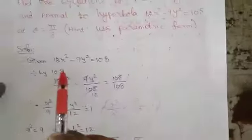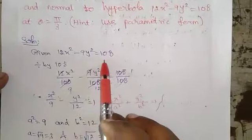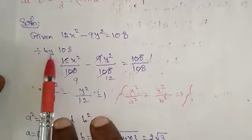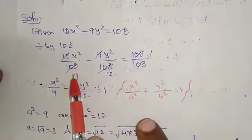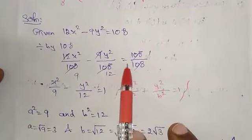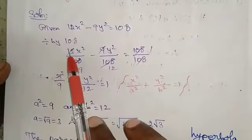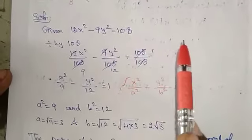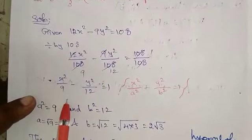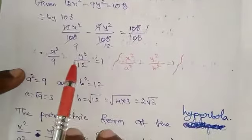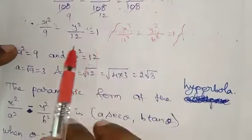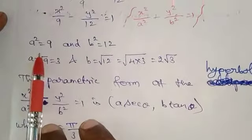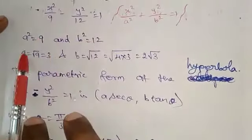Given the hyperbola equation 12x² minus 9y² equals 108. Dividing throughout by 108: 12x²/108 minus 9y²/108 equals 1, which simplifies to x²/9 minus y²/12 equals 1. This is the standard form, so a² equals 9 and b² equals 12.